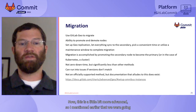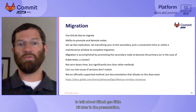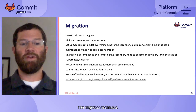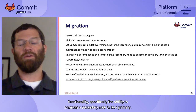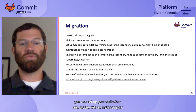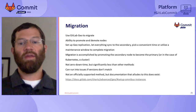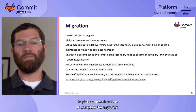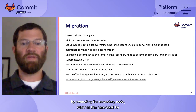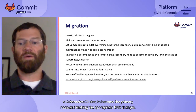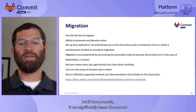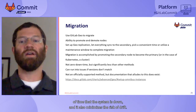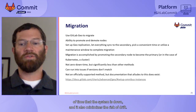This next approach is a little bit more advanced. It relies on the GitLab Geo functionality — specifically the ability to promote a secondary node to be a primary node. You can set up Geo replication and let the GitLab instance sync to the secondary node. When synced, you work with your stakeholders to pick a convenient time to complete the migration by promoting the secondary node — which in this case could be a Kubernetes cluster — to become the primary node and making the appropriate DNS changes. This is not a zero downtime migration, but if done properly it can significantly lessen the amount of time the system is down and minimizes the risk of drift.